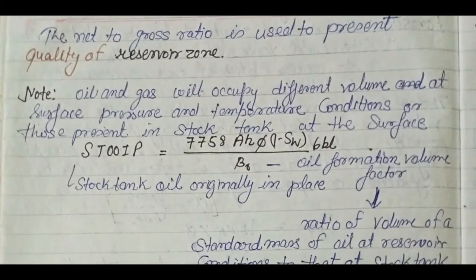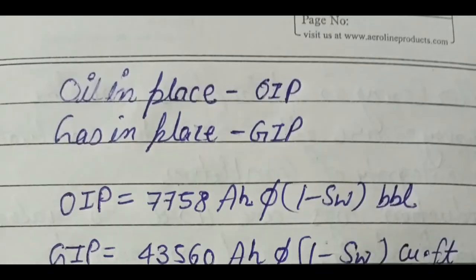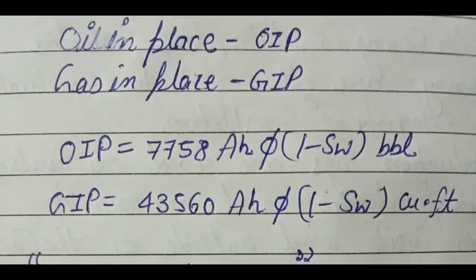There is a term called STOIIP — Stock Tank Oil Originally In Place — which may be asked in interviews. Before understanding it, you need to know oil in place and gas in place. The oil in place formula is 7758 times A times H times phi times (1 minus S-w) in barrels. When oil and gas are originally at reservoir conditions they are at different temperature and pressure, and when raised to the surface their volume changes.